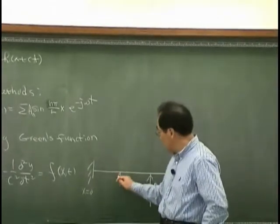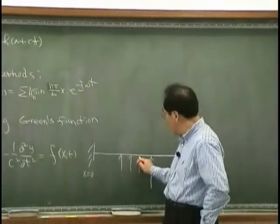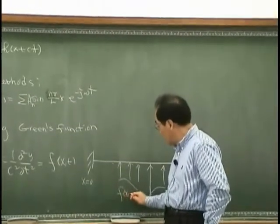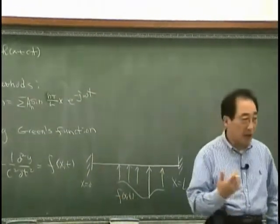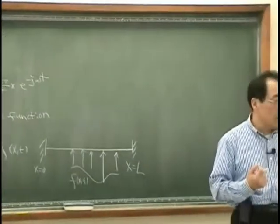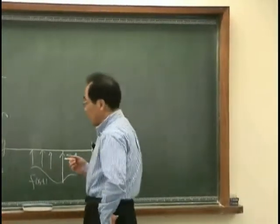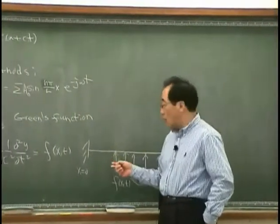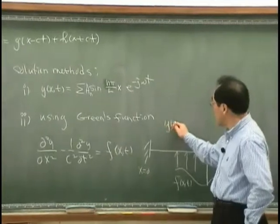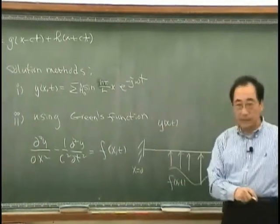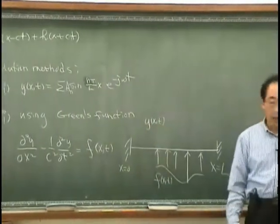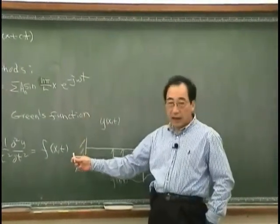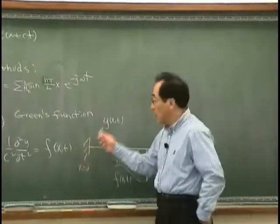Then we may consider this as sort of excitation acting on the string. How can I get the general solution? I mean the solution where the string is excited by f(x,t). Now, want to know ψ(x,t). How can I get it? Of course, I can use this method. Or,